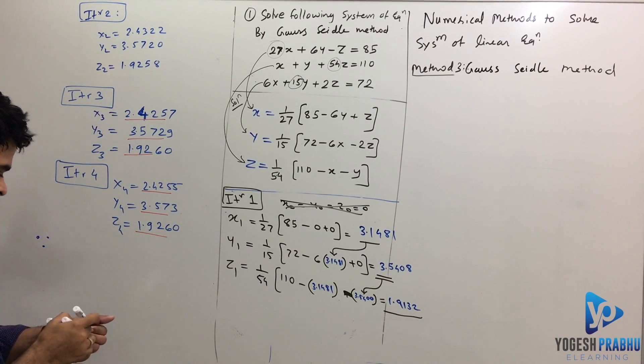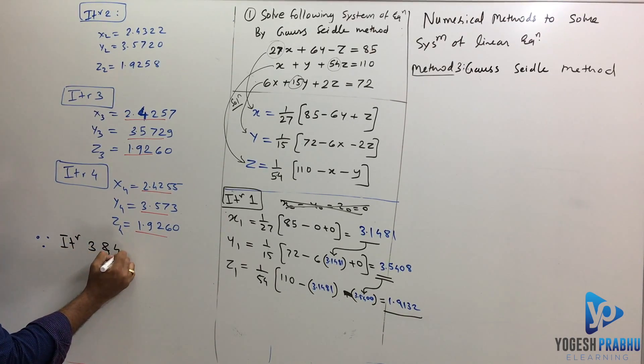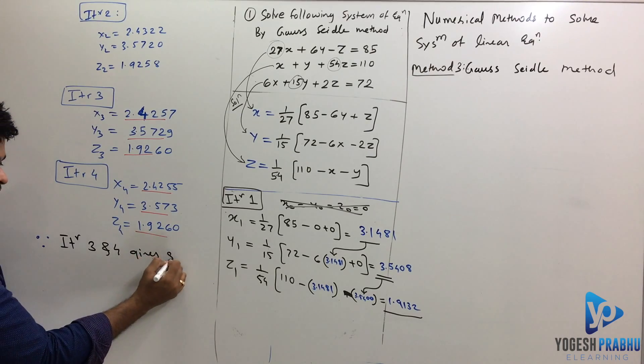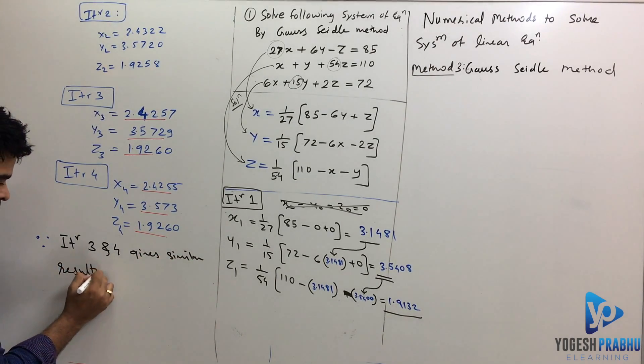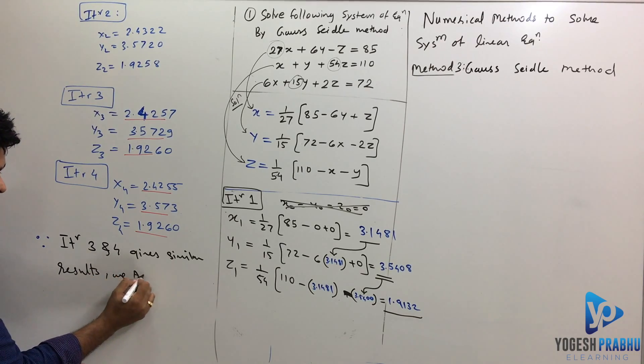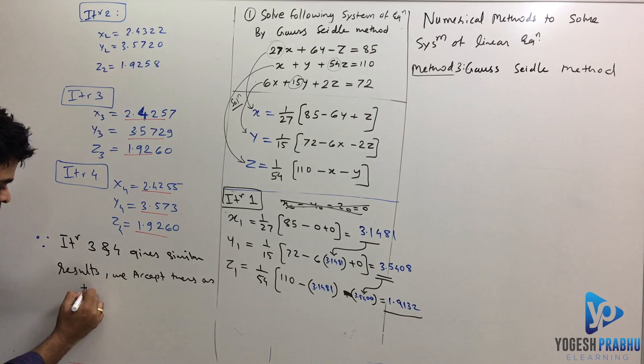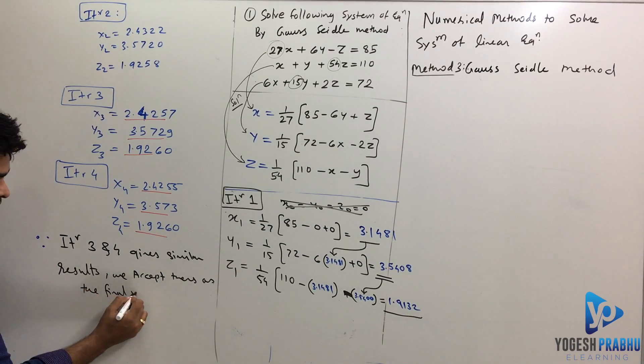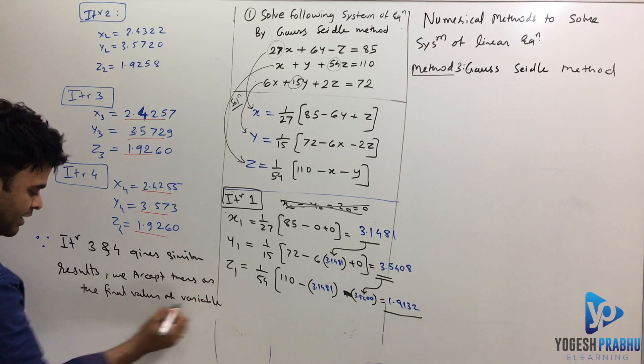So I'll just write down the final statement here. Since iteration 3 and 4 gives similar result, we accept these as the final values of variables.